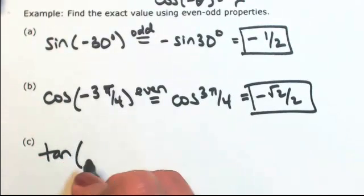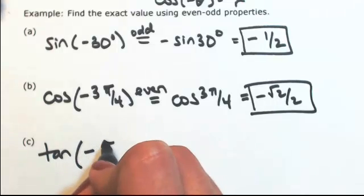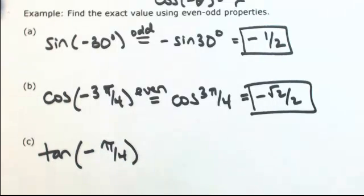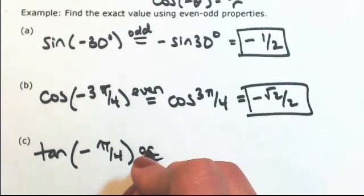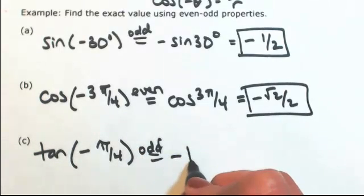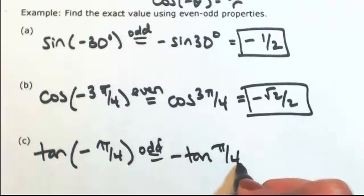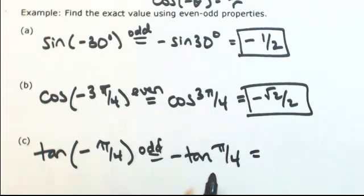Let's try tangent. Tangent of -π/4. Because tangent is odd, the negative comes out front. All we need is tan(π/4), which is 1, and attach a negative to get -1.